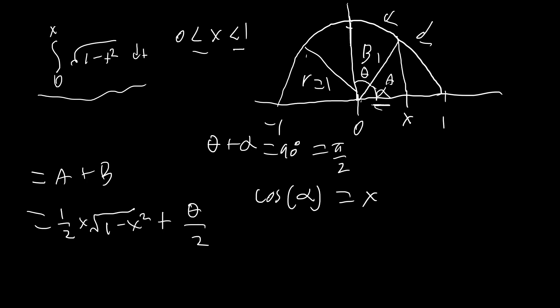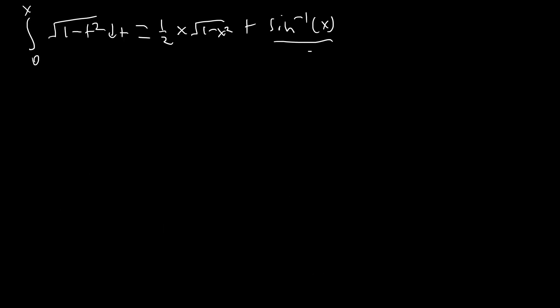So that means that theta equals pi over 2 minus alpha, so we could say that, or actually we could say alpha equals pi over 2 minus theta. So that means that cosine of pi over 2 minus theta equals x, or sine of theta equals x, which means that theta equals arc sine of x. So I'm going to go ahead and move our findings onto the next slide.